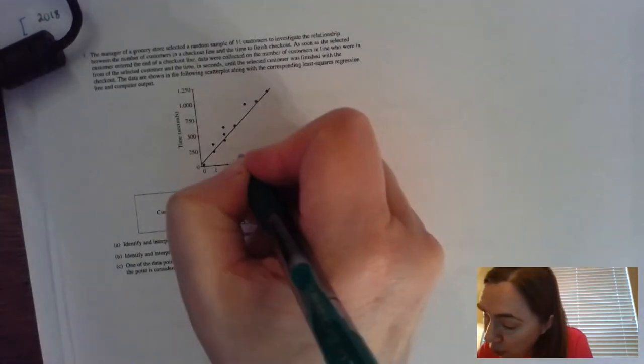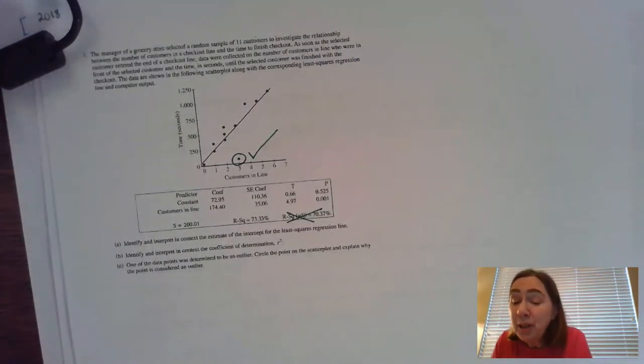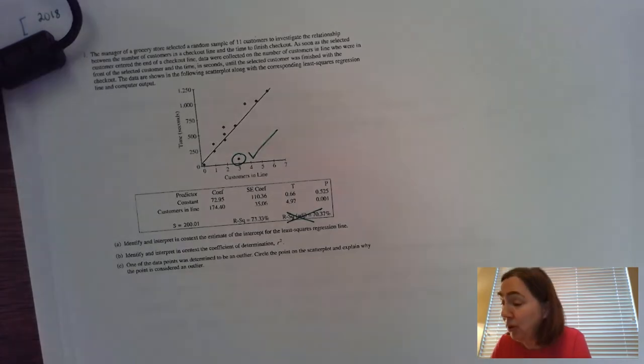It was really easy to get the circle check. Obviously from this, if you circle this one right here, you're going to get your first check. And that actually meant that you got half credit on this particular part C. It was a lot harder to get the explanation as to why this is an outlier.